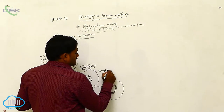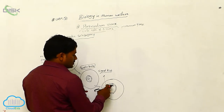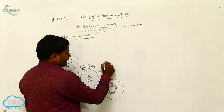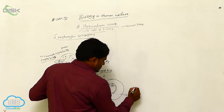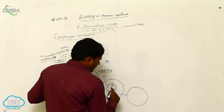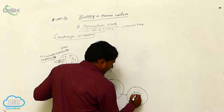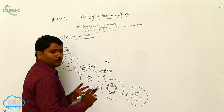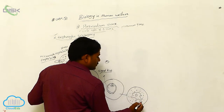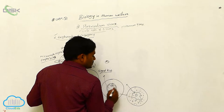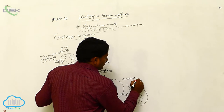This is called as signet ring stage. It is called signet ring stage because when the vacuole pushes the nucleus to a corner, it looks like a ring. Later, this parasite loses the food vacuoles and develops pseudopodia. The parasite stage with the pseudopodia is called as amoeboid stage.